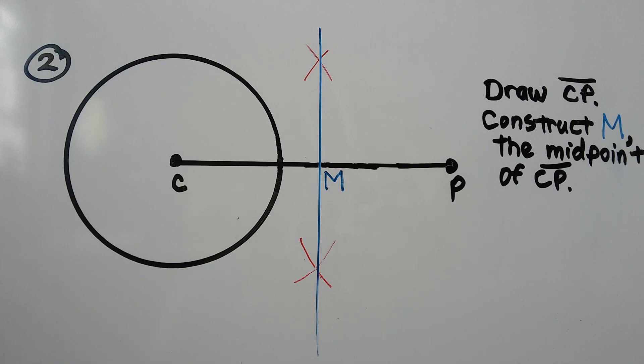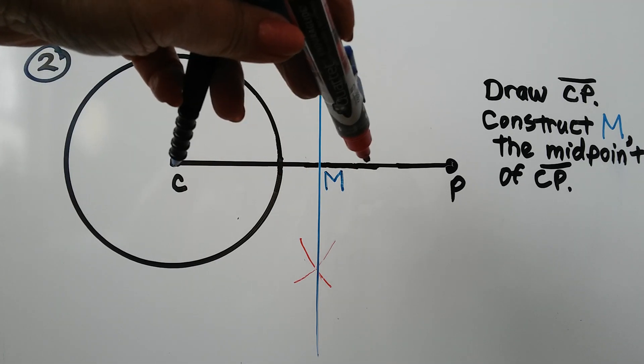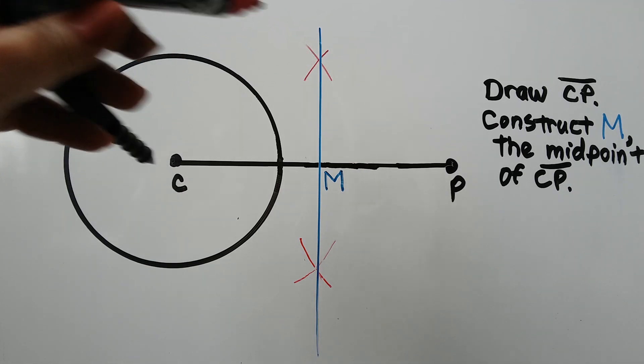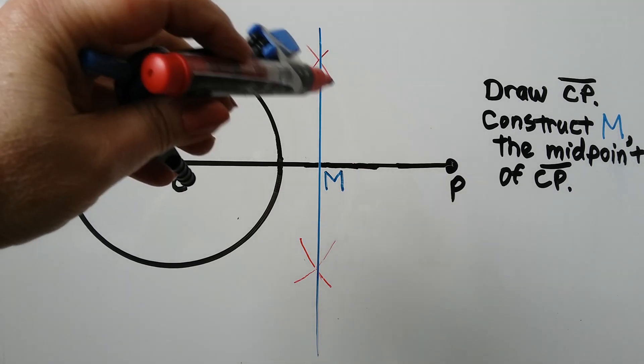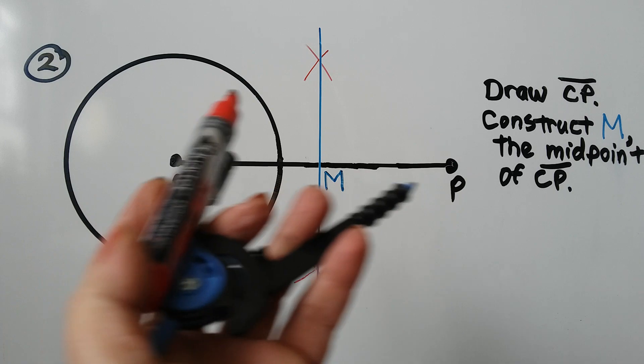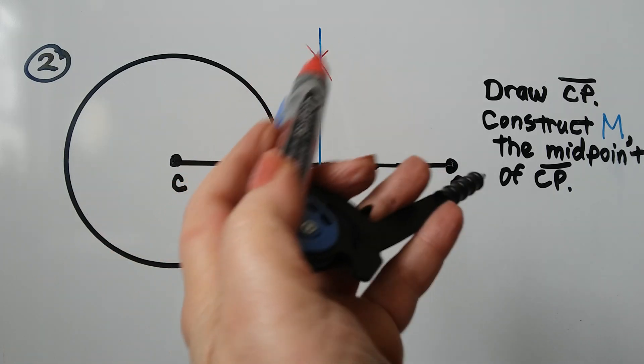So we did this before, but if you don't remember, all we have to do is open up our compass more than halfway, like that, and with our point on C, we make an arc, and then same setting, point on P, make an arc.